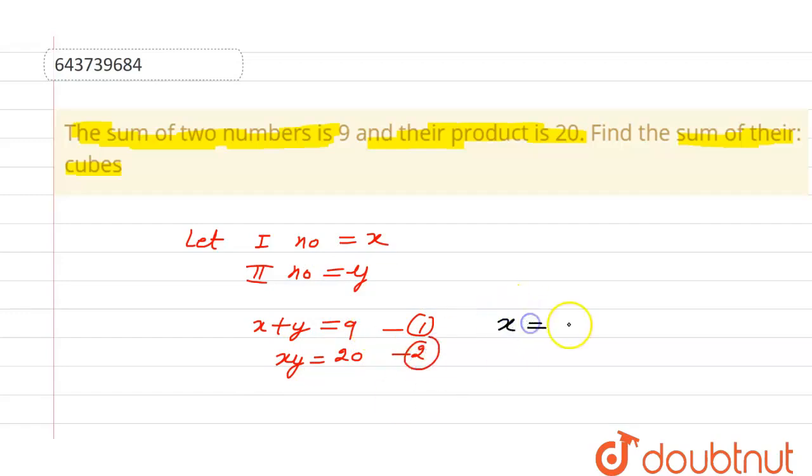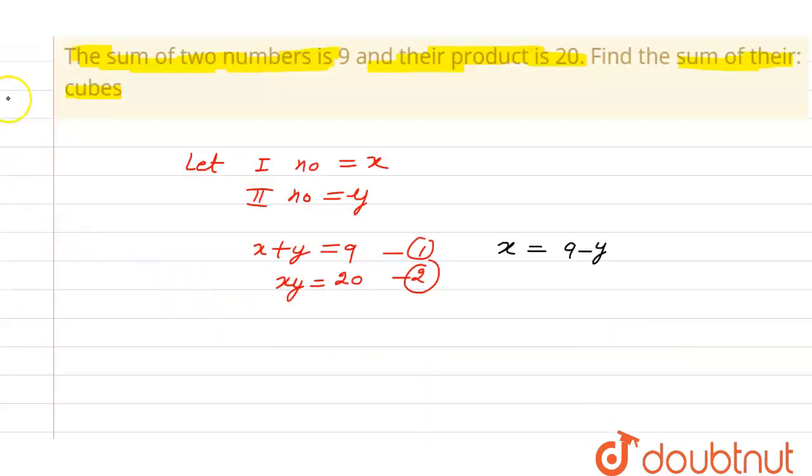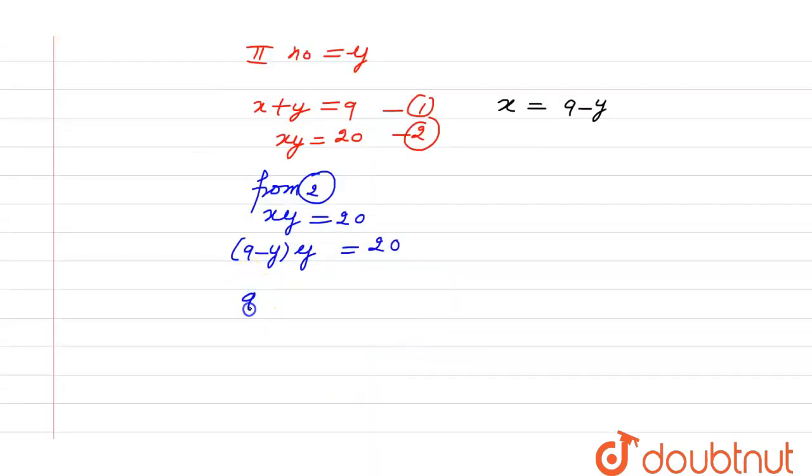So we can calculate the value of x from here, which is equal to 9 minus y. Now we can put the value of x in second equation. So we will get from second equation: xy equal to 20. Now we can put the value of x here: 9 minus y into y equal to 20. So now 9 into y minus y square equal to 20.